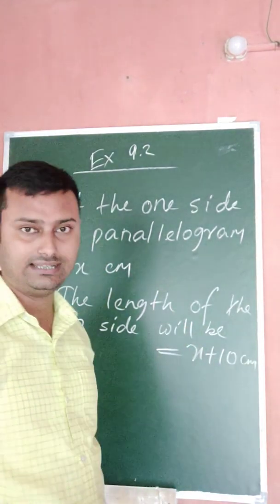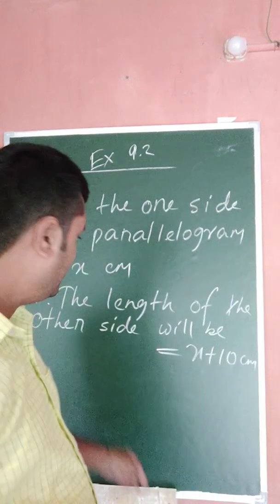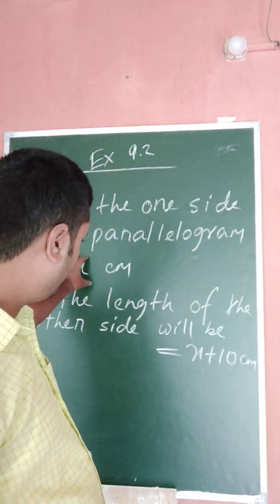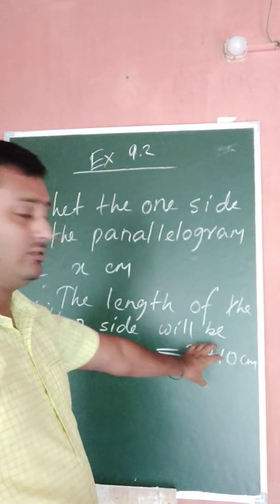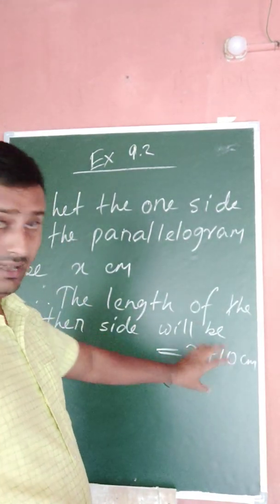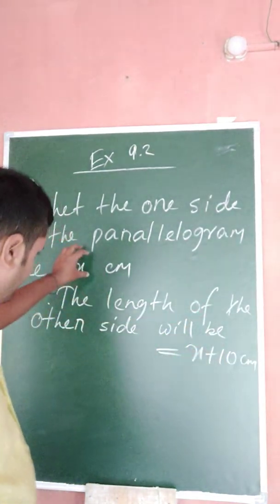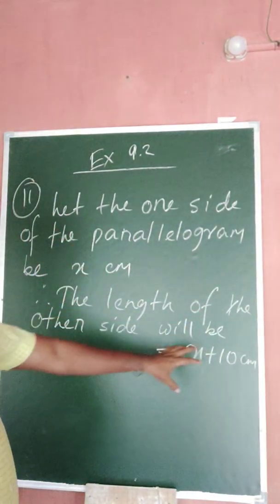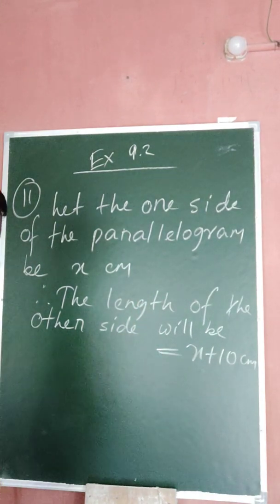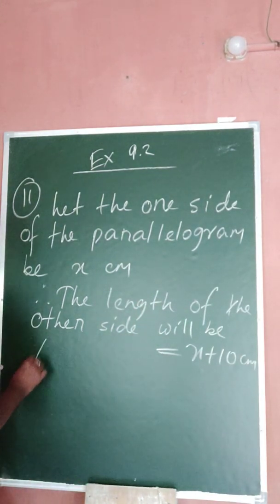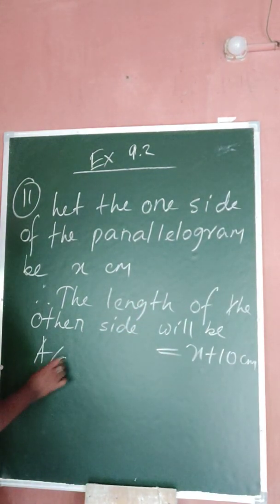So if one side is x centimeters, then another one will be x plus 10. That means if one is the length, then this will be the breadth, and if this will be breadth then this will be length.